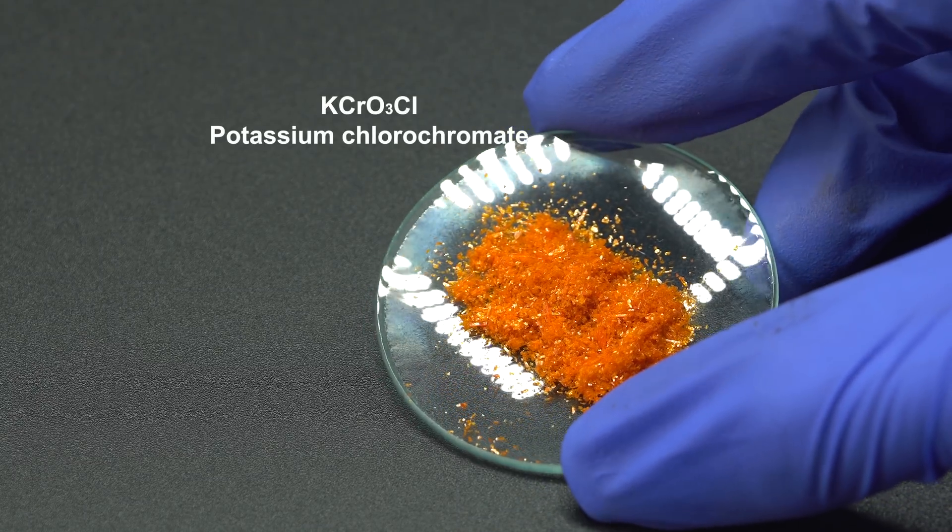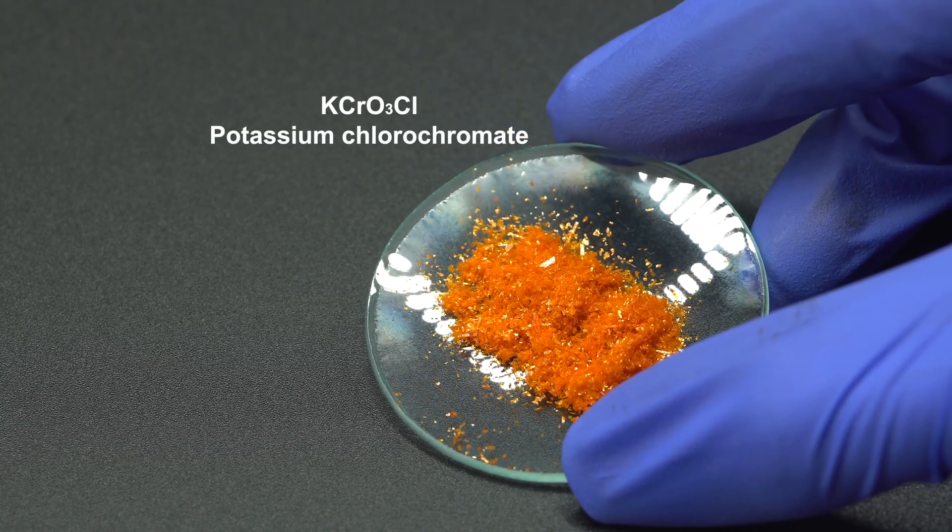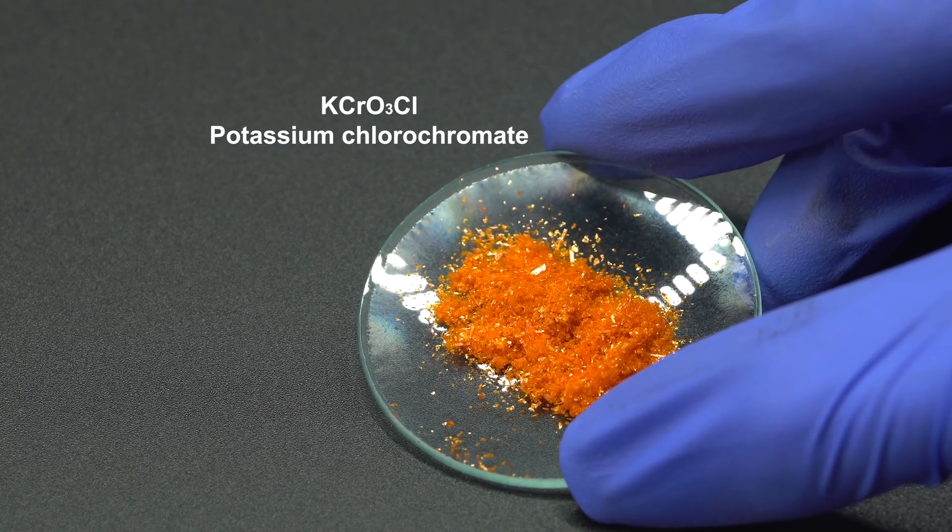Chromyl chloride is easy to get very quickly at the lab by adding potassium chlorochromate to concentrated sulfuric acid or oleum.